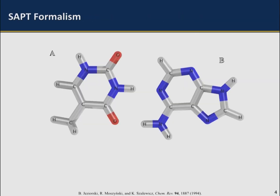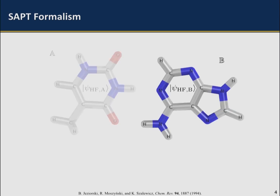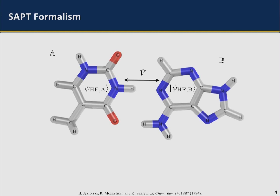How we actually approach this from a theoretical chemistry standpoint is we try to calculate the interaction energy between two non-bonded molecules. The methodology we use in my group is Symmetry Adapted Perturbation Theory, or SAPT, developed by Krzysztof Szalewicz and his co-workers in the late 80s and early 90s. This starts from the molecules at infinite distance apart. We build the wave function for monomer A in isolation and the same for monomer B. Only then do we turn on the interaction by bringing the molecules together. Since that interaction energy is so much weaker than the covalent bonds, it's plausible to treat it with a perturbation series. You get a nice breakdown in terms of four physically motivated components: electrostatics, steric repulsion, induction and polarization, and London dispersion.